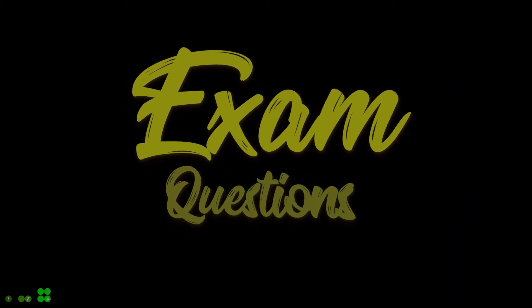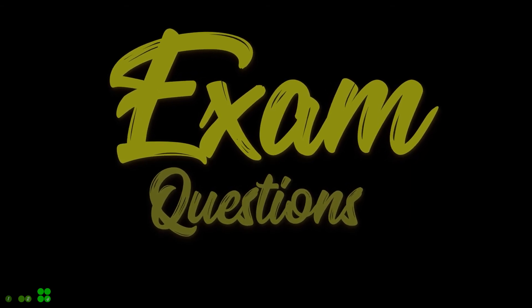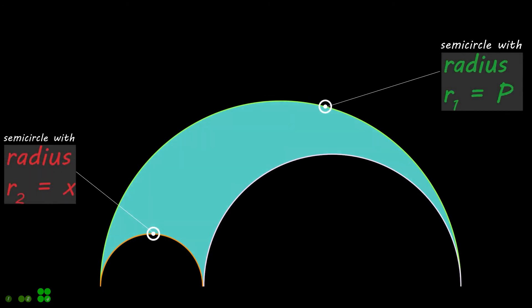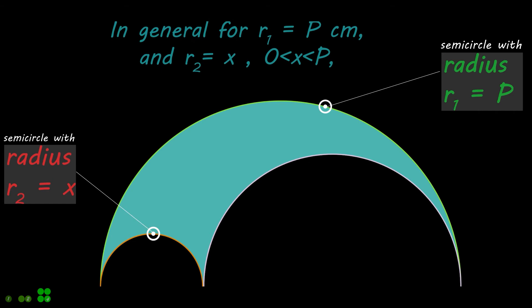Let's look at some more related exam questions. In general, for a fixed value of R1, say p centimeters, and R2 equal to x, find an expression in x for the area of the Arbelos.